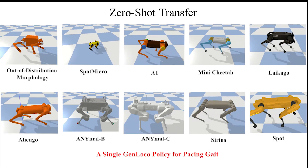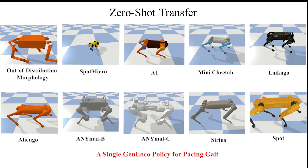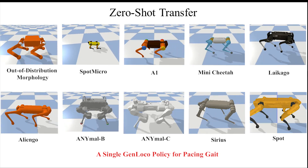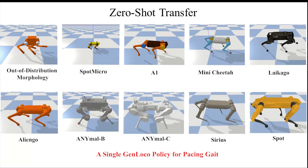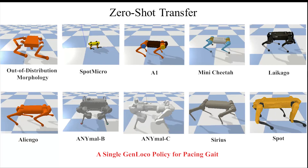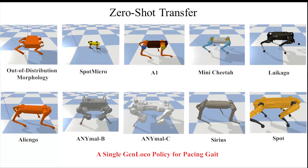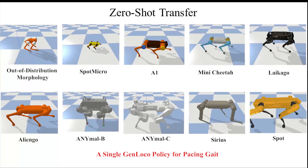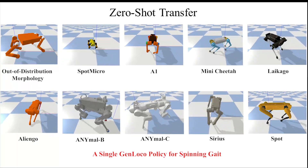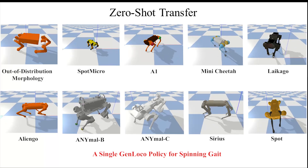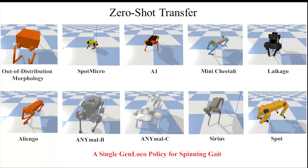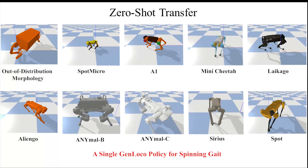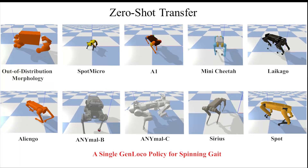Our controllers are tested on simulated models of commercially available robots and morphologies, with parameters outside the training range. Our policies are some of the first locomotion controllers that can be deployed directly on different quadrupedal robots without further fine-tuning.